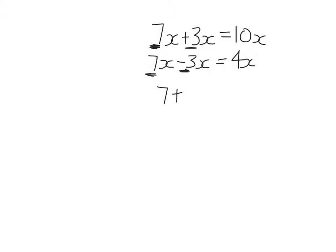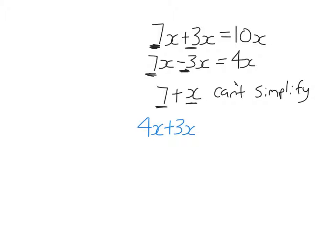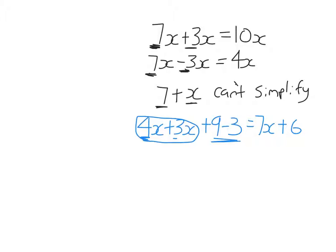If I have something like 7 plus x, I cannot simplify that, because one term is 7 and one is x — they do not have the same sequence of pronumerals, they are not like terms. You can only add or subtract like terms. So let's add 4x plus 3x plus 9 minus 3. I search for like terms: 4x and 3x are like terms, so 4x plus 3x is 7x — I just added the coefficients, 4 plus 3 is 7. And 9 and 3 are like terms, so 9 minus 3 is 6. The final answer is 7x plus 6. I can't simplify further because one term has an x and one doesn't — they are not like terms.